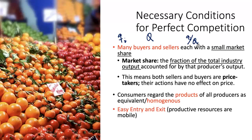The third condition for perfect competition is that there is easy entry and exit. Productive resources are very mobile — you can easily bring more resources into the industry, and if need be, you can exit the industry easily. There are no barriers to entry, nor any conditions enforcing exit. Lastly, we have well-informed buyers and sellers, meaning perfect information — everybody knows the quality of the product and has full information.